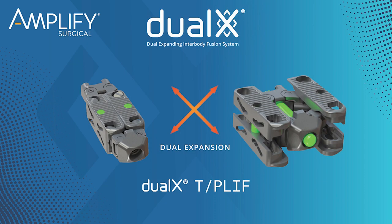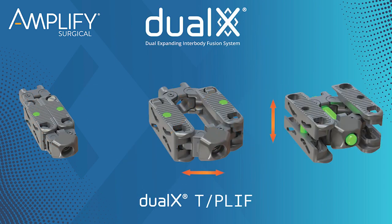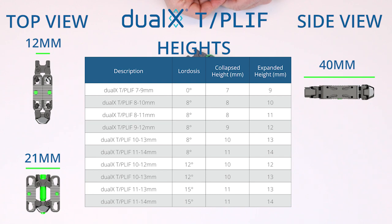The Dual-X implant expands in two directions, laterally first, then vertically. Each implant starts out at 12 millimeters wide and expands to 21 millimeters wide. It starts out at 40 millimeters long and when expanded is 25 millimeters long.